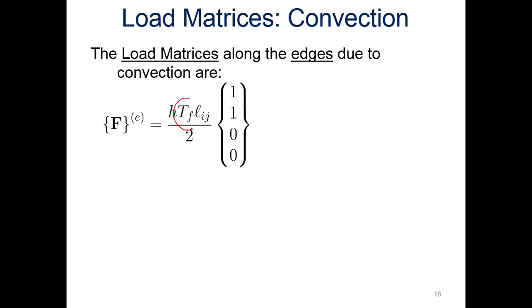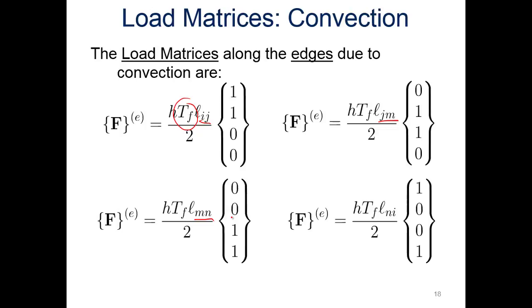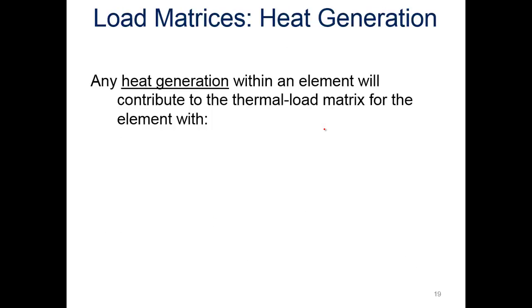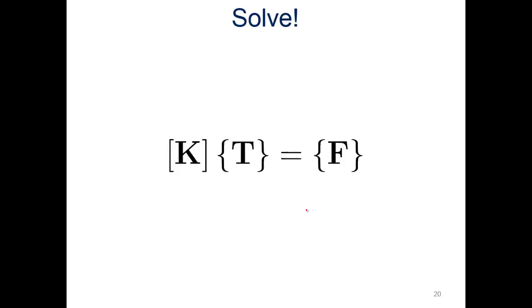For load matrices, the load along the edges due to convection must include the fluid temperature. For edge I-J we include one load vector, for edge J-M another, for edge M-N another, and for edge N-I yet another. For heat generation, any heat generation within an element contributes to the thermal load matrix as Q-dot times the element area divided by four, distributed equally to every node in the element as a single-column matrix. We can then put those together and solve for the nodal temperatures.